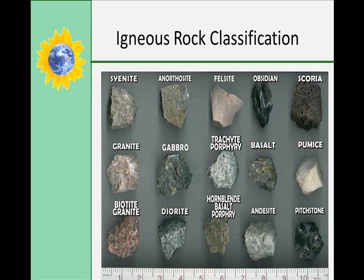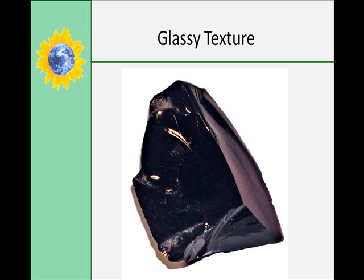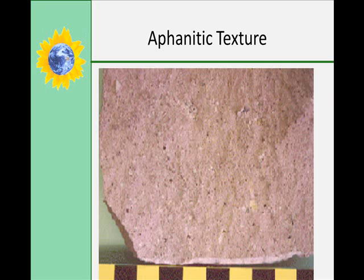Igneous rocks are classified on their texture and their composition. Igneous textures can include glassy, aphanitic, phaneritic, porphyritic, vesicular, and pyroclastic. Glassy textures mean that there was instantaneous cooling — obsidian is volcanic glass. Aphanitic has a fine grain size, meaning the grains are less than 1 mm in size. These are the result of quick cooling and can include basalt, rhyolite, and andesite.